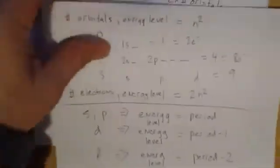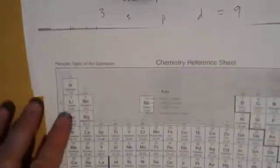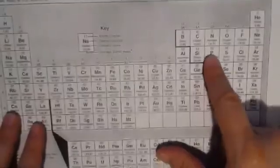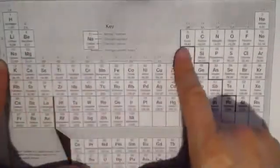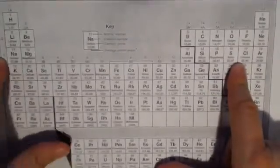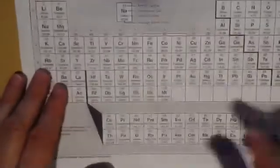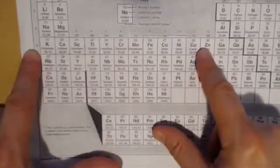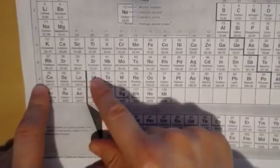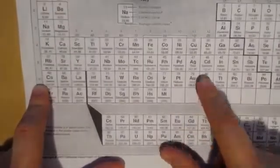Reminding ourselves of the filling pattern on the periodic table. For s and p, the energy level equals the period. So looking at the periodic table, if I'm in the second period, beryllium would be 2s2. Or if I was looking at phosphorus, that comes from the third period, that would be 3s2, 3p3. For the s and p, the energy level is equal to the period. For the d, the energy level is equal to the period minus one. So in the fourth period, this is the 3d. We go 4s1, 4s2, 3d1, 2, 3, 4... 3d10 at zinc. If we went down to the sixth period, this would be the 5d. So platinum would be expected to be 5d8, mercury would be 5d10, and so on.